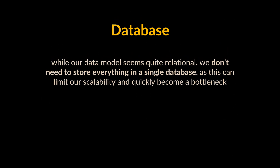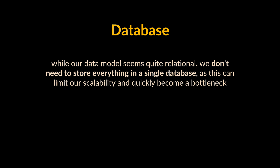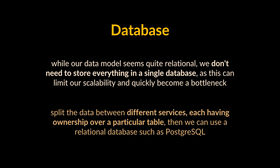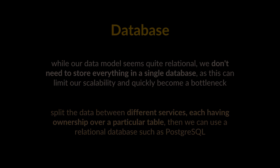Now we should decide what kind of database to use. While our data model seems quite relational, we don't necessarily need to store everything in a single database, as this can limit scalability and quickly become a bottleneck. We can split the data between different services, each having ownership over a particular table. Then we can use a relational database such as PostgreSQL, or a distributed NoSQL database such as Apache Cassandra, for our use case.